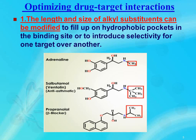Coming to the length and the size of the alkyl substituents: these can be modified to fill up hydrophobic pockets in the binding site or to introduce selectivity for one target over another. Alkyl groups attached to heteroatoms are most easily modified. For example, adrenaline is a neurotransmitter released by the adrenal glands. It contains a methyl group on the nitrogen in the structure and it binds to adrenergic alpha and beta receptors to show its action. As compared to adrenaline, this methyl group is replaced by a tertiary butyl group in salbutamol.